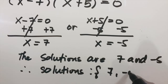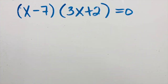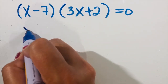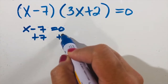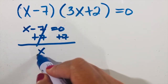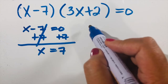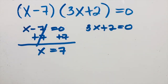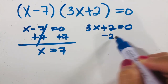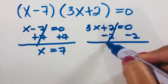How about (x minus seven) times (3x plus two) equals zero? Same process — we set each factor equal to zero. The first factor: x minus seven equals zero, so add seven on both sides, giving x equals seven, just like in the first example.